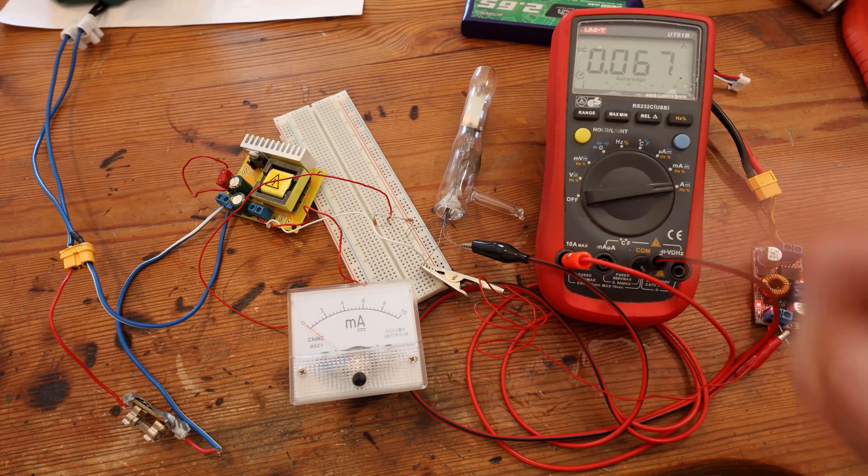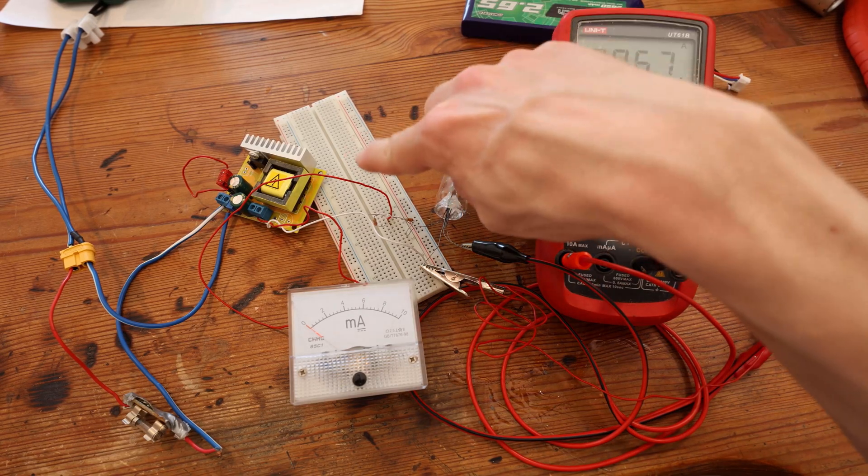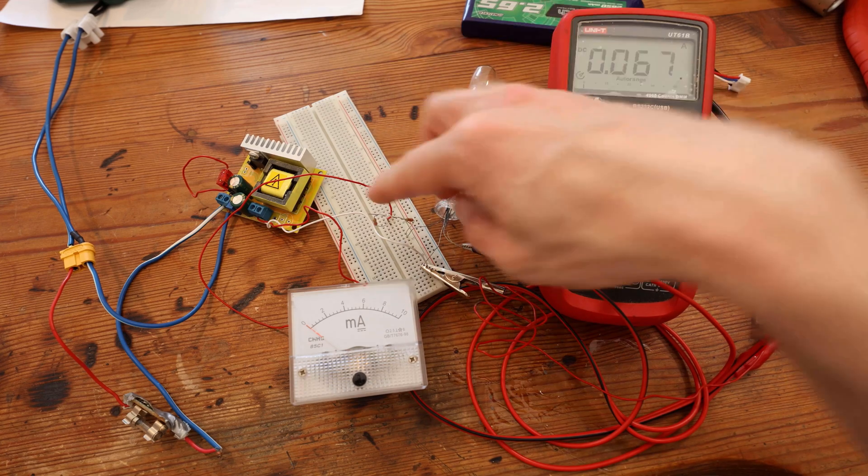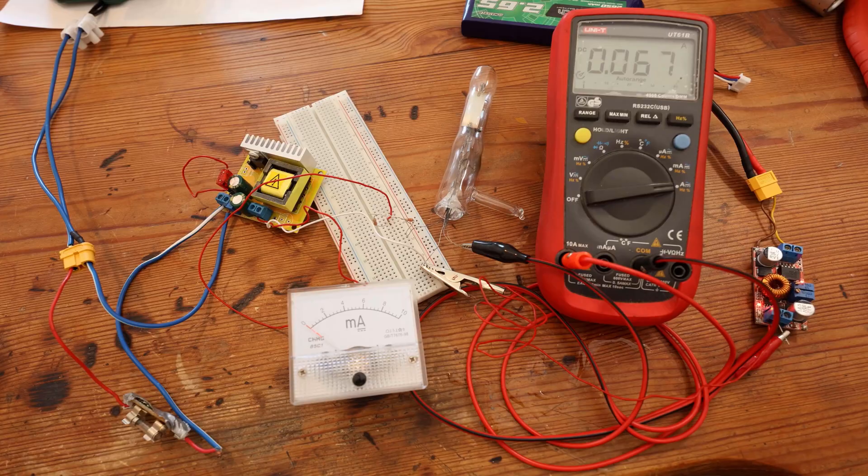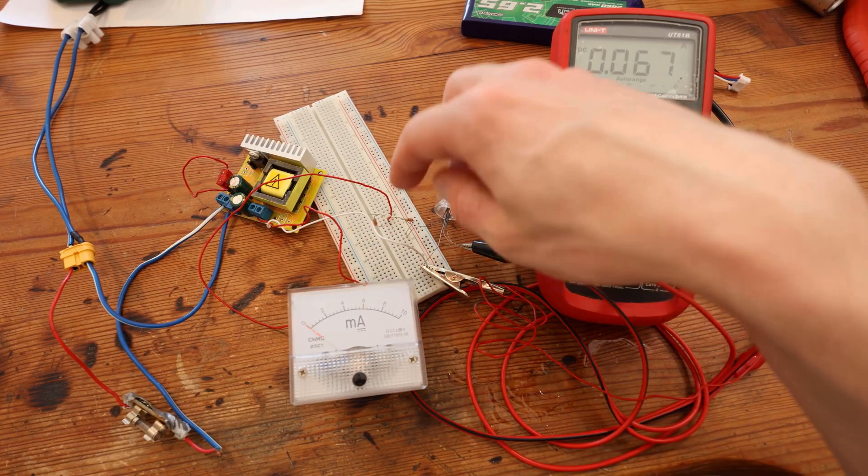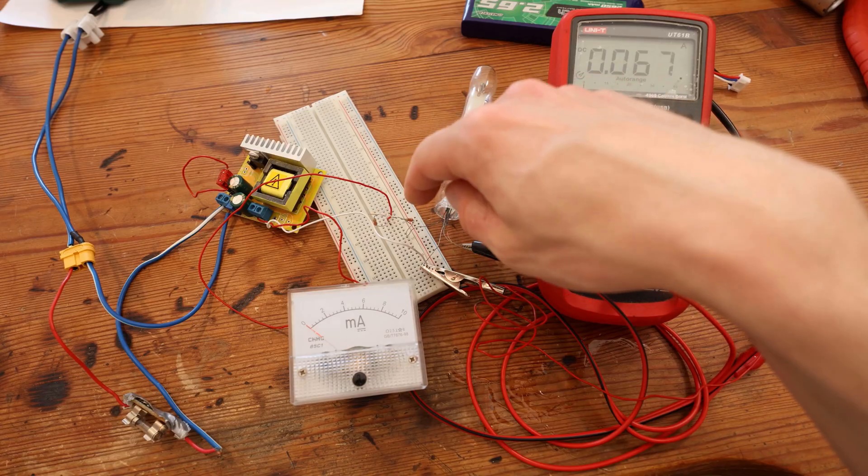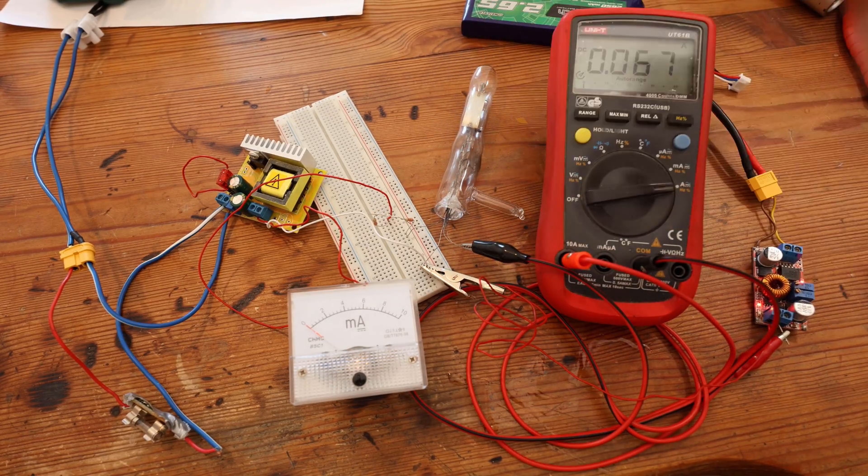So I put together this kind of messy test circuit. Again, this is the high voltage thing, just a cheap high voltage thing. And it's supplying 400 volts and it's going through this milliamp meter to these two resistors. This is 66 kilo ohms and then to the plate of the tube.